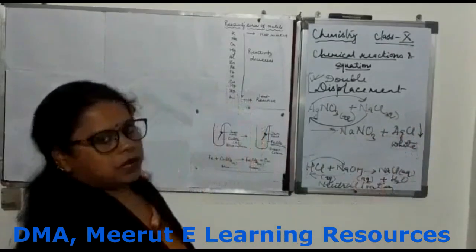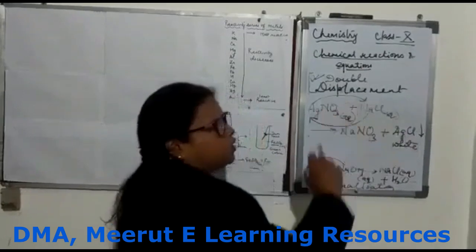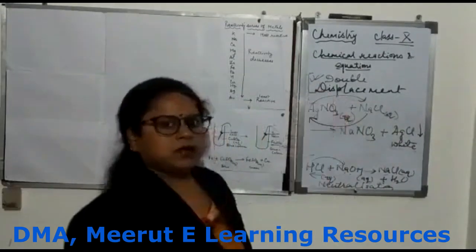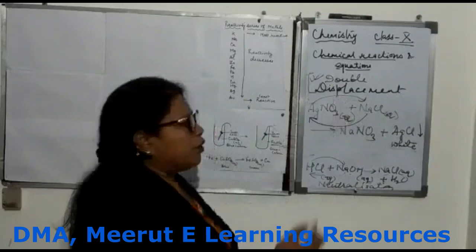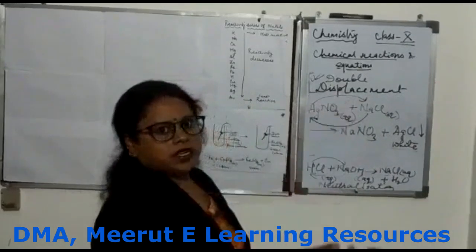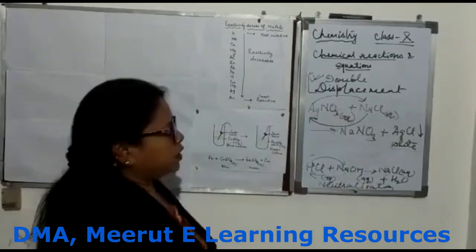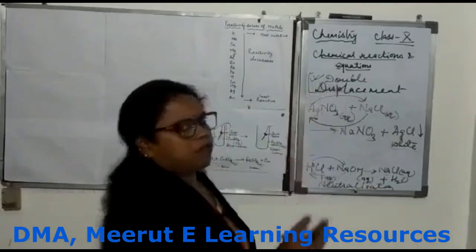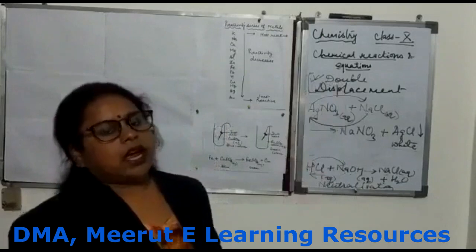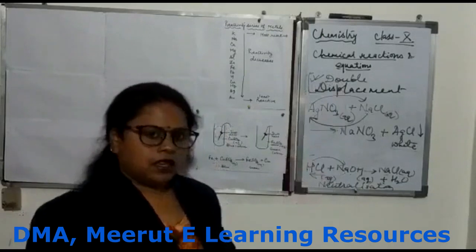This type of reaction can be called either a precipitation reaction or a double displacement reaction. The main type is double displacement reaction, and the characteristic is precipitation reaction. Today we have learned displacement reaction and double displacement reaction. Thank you.